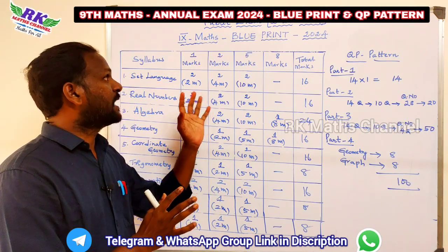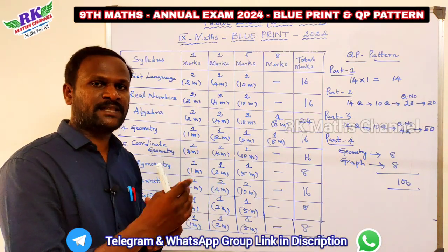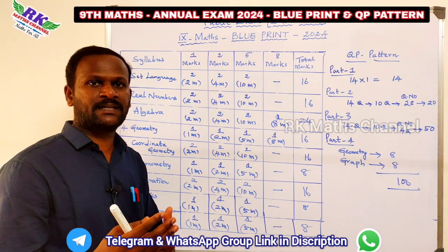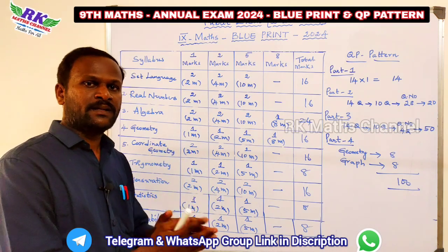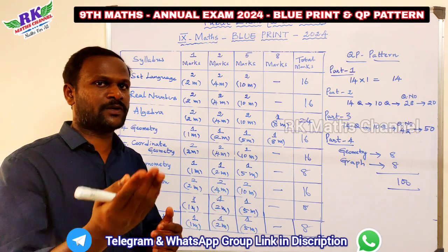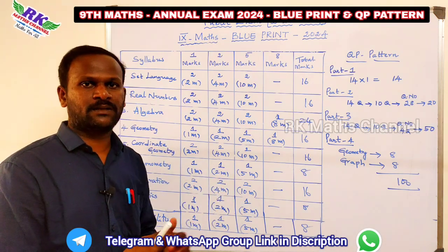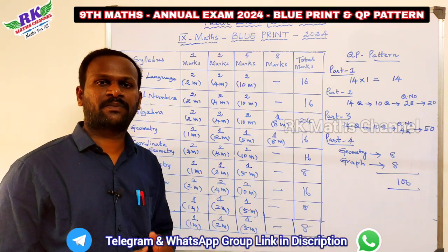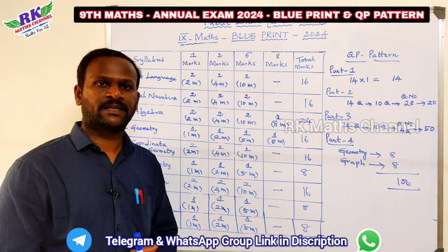So this is the new marks distribution. If you are a 10th student, you'll practice in the 10th class, and if you are in 9th class, you'll practice accordingly. You can also cover 7th and 8th class topics. This is the annual exam blueprint. If you're interested, please like the video and subscribe to our channel. Thank you.